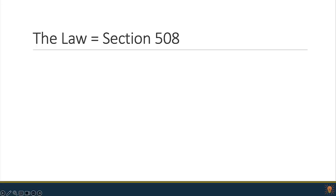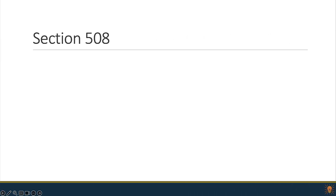Let's talk specifics about the law to give you a little context — I won't go deep into any of the law, I promise. The law is Section 508. You've probably heard of it — not the most catchy name, but super important. Section 508 is the portion of federal law that relates to digital and web accessibility. This federal law has been adopted by most states as their own guidelines for accessibility. We'll talk more about what Section 508 requires in just a moment.